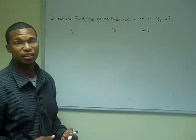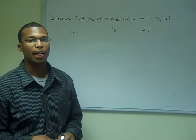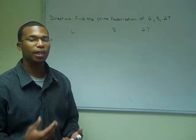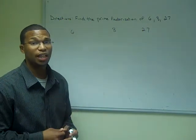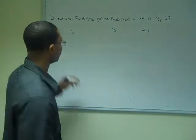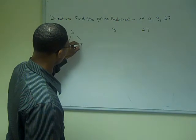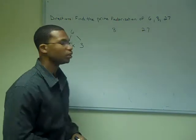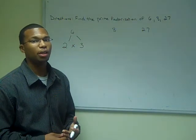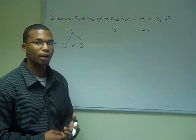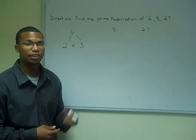For the number 6, I just find two numbers that can multiply to give 6. After I find those two numbers, I build upon them and keep going until all of the numbers are prime. For example, with 6, I will start with the factors 2 times 3. It just so happens that 2 and 3 are both prime numbers, meaning they are only divisible by themselves and one. So the prime factorization of 6 is 2 times 3.